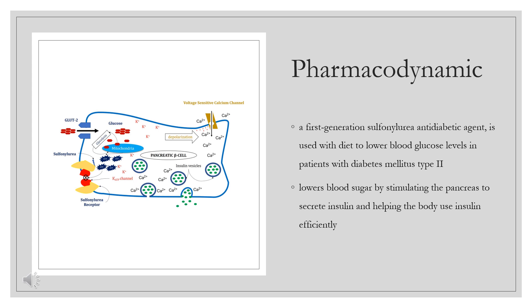Tolbutamide, a first-generation sulfonylurea antidiabetic agent, is used with diet to lower blood glucose levels in patients with diabetes mellitus type 2. Tolbutamide is twice as potent as the related second-generation agent glipizide. Tolbutamide lowers blood sugar by stimulating the pancreas to secrete insulin and helping the body use insulin efficiently; the pancreas must be able to produce insulin for this drug to work.